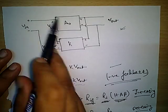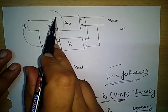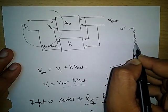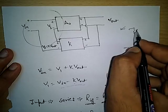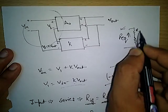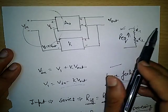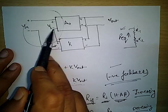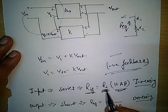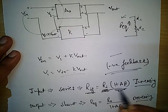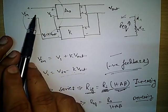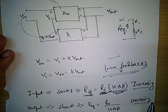At the input, we can easily see there is a series connection. If we connect resistance in series, the equivalent resistance always increases because it is a summation. Similarly, at the input there is a series connection, so the input impedance R_I increases. It increases by the factor (1 + Aβ), so input impedance increases due to the series connection at the input.